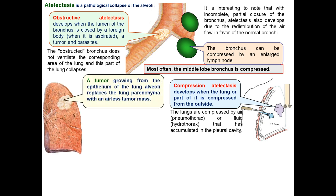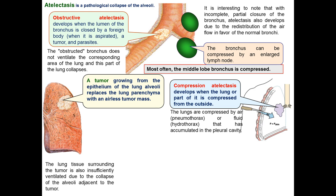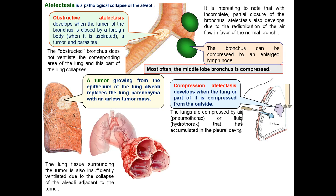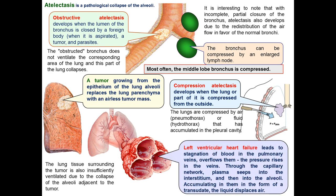A tumor growing from the epithelium of lung alveoli replaces the lung parenchyma with an airless tumor mass. Lung tissue surrounding the tumor is also insufficiently ventilated due to the collapse of alveoli adjacent to the tumor.